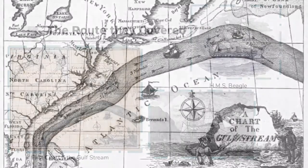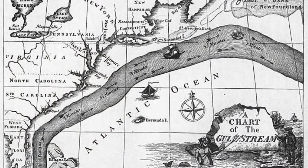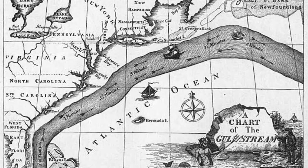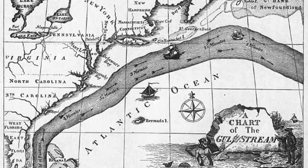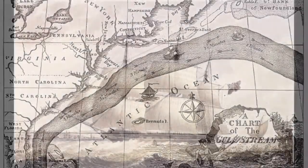The Gulf Stream is a body of water lying in the middle of the Gulf of Mexico and up the eastern coast of North America. On the coast, it brings up a warm climate which has an impact on ships traveling in the area.